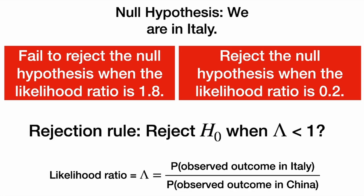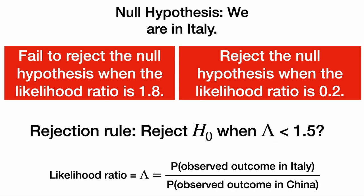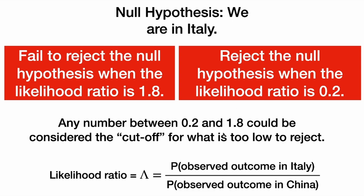But what's our cutoff for rejecting? Do we always reject the null hypothesis when our likelihood ratio lambda is less than 1? Maybe that's not the best cutoff. Should we reject the null when lambda is less than 1.5? Well, that's between these two numbers, so that should work. Should we reject the null hypothesis when lambda is less than 0.3? That would work as well. Any number between 0.2 and 1.8 could be considered the cutoff for what is too low and will make us reject the null hypothesis.